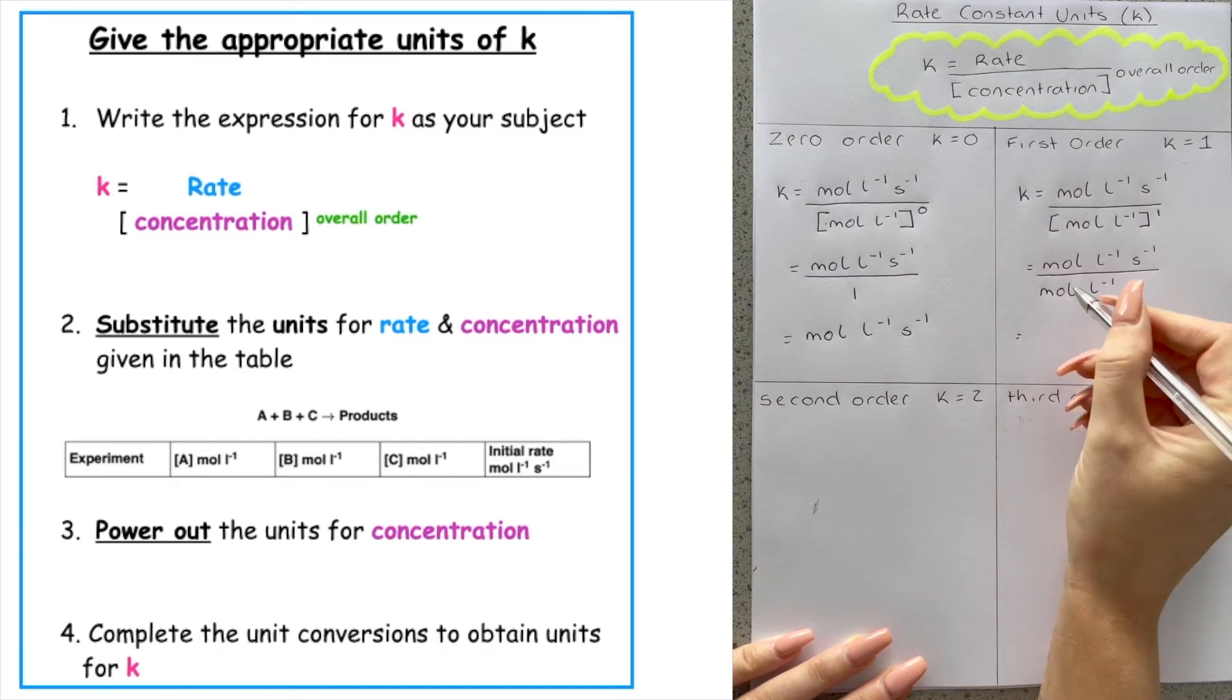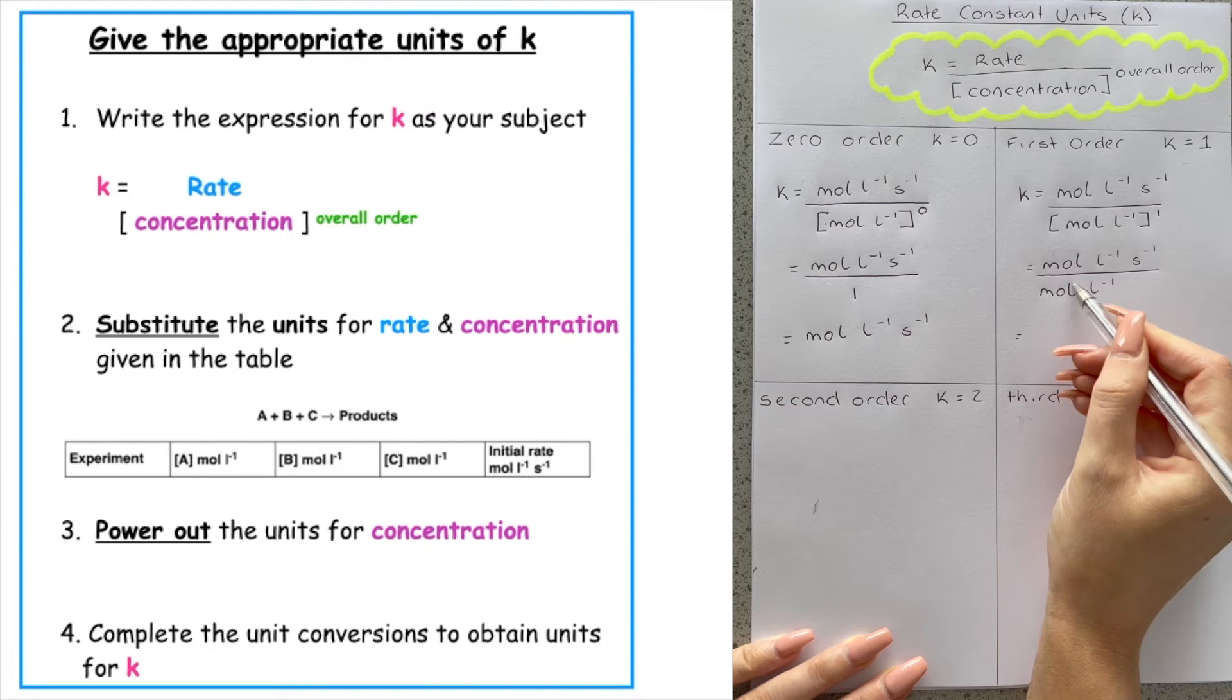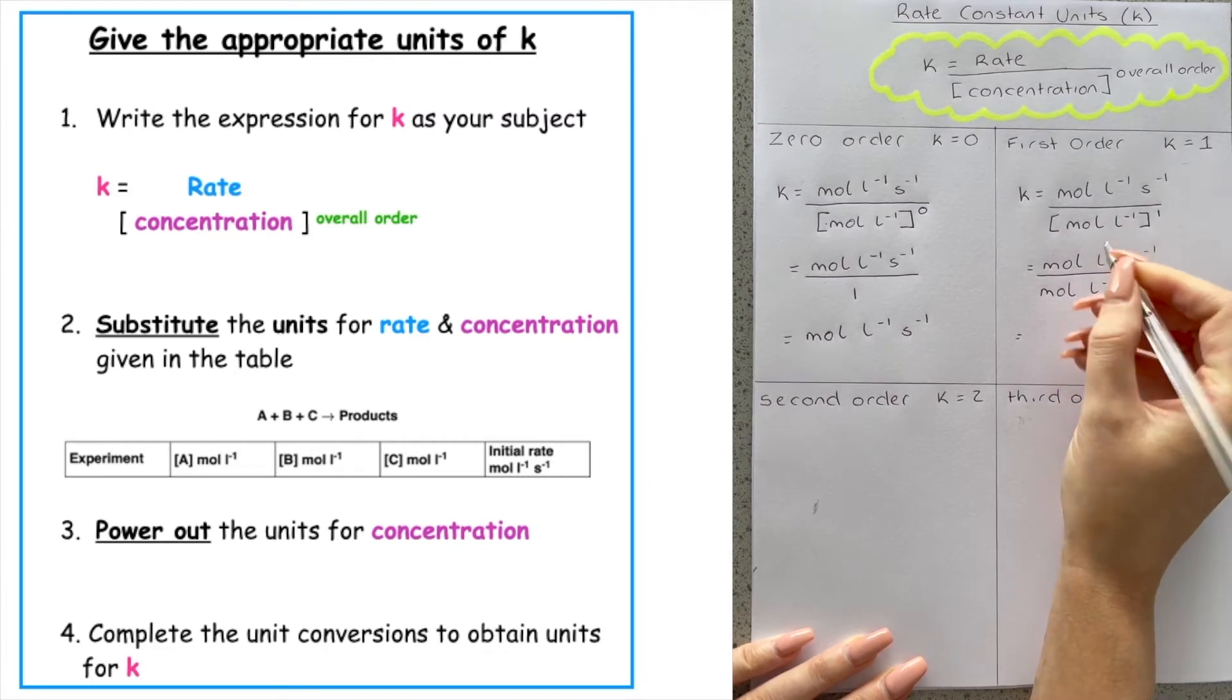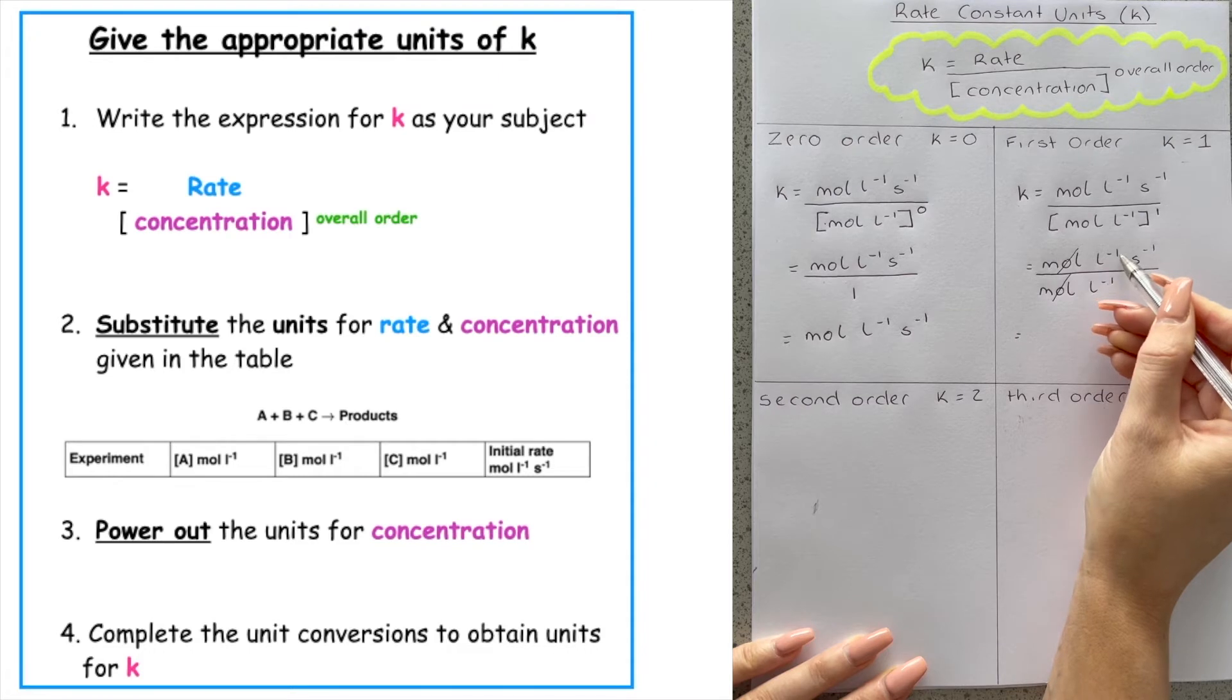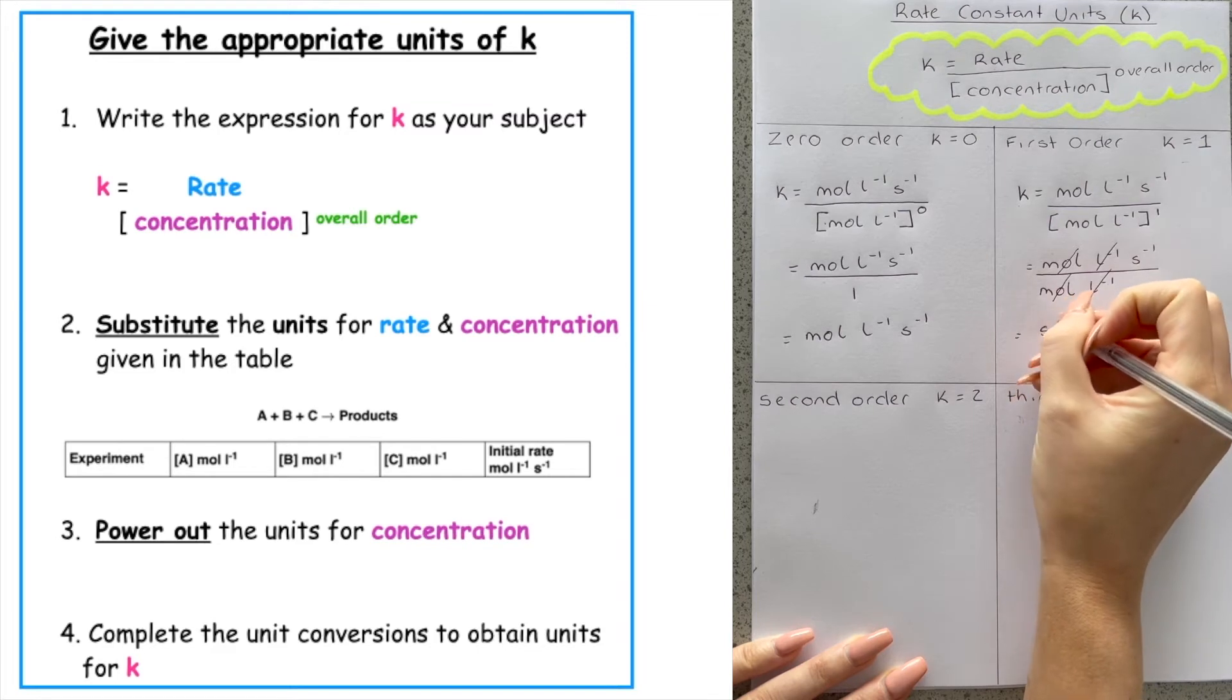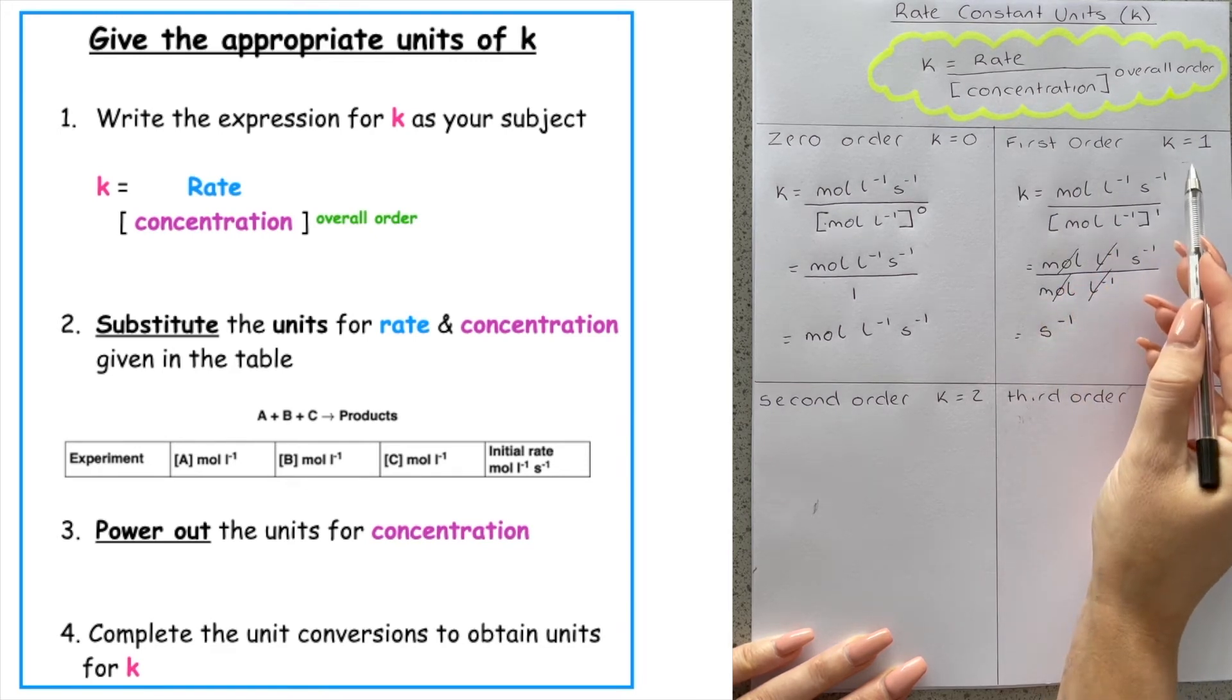Now what we want to do is we'd want to take the bottom and bring it up to the top. So if mole is positive one at the bottom, when I bring it to the top, it is negative one. One minus one, they cancel each other out. L to the minus one would become L to the positive one. Minus one plus one cancels each other out. And that leaves me with the expression of per second, which is the appropriate units for k when the overall order of the reaction is first order.